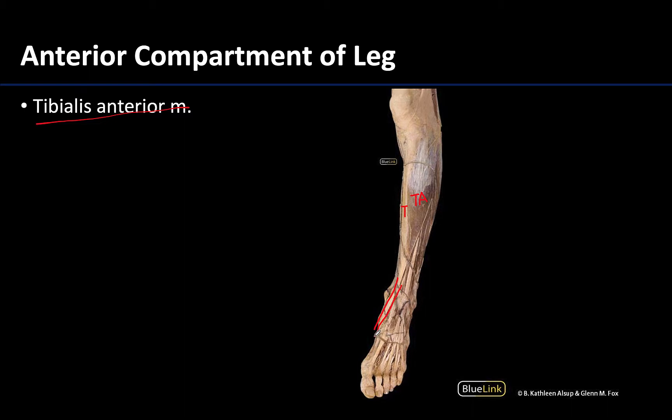If you look at the foot you can see a tendon that's spreading out into four tendons — that's going to be the tendons for the extensor digitorum longus muscle, spreading to digits two through five, as you can see there.